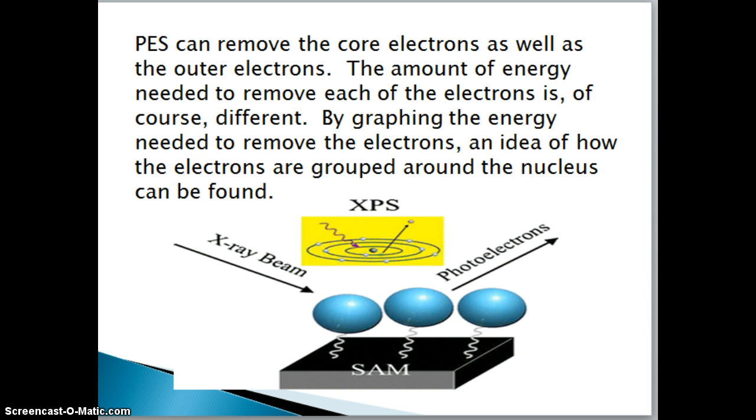If we're clever and we look at the energy which is needed, we can actually write an electron configuration based on the amount of energy that's needed to knock out all the electrons.